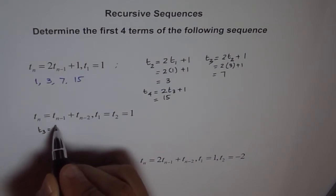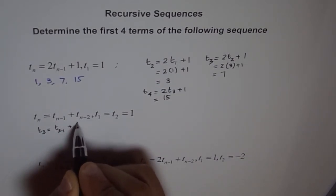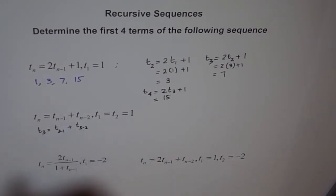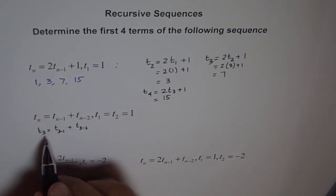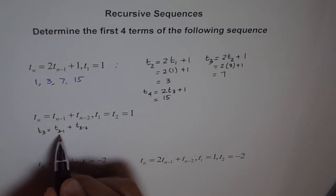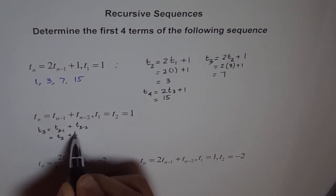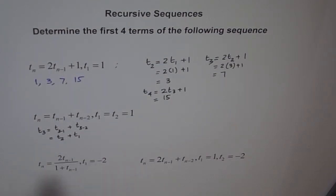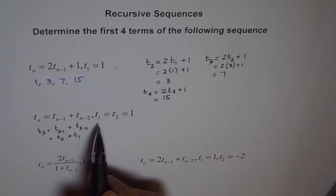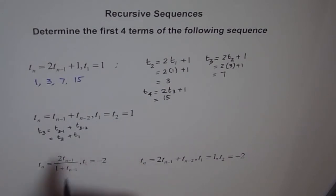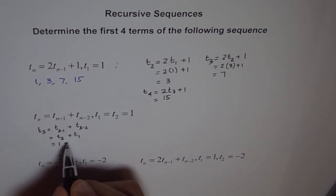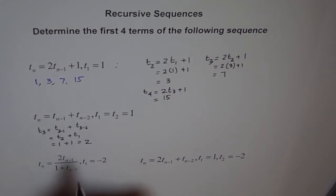Basically, T3 is equal to T2 plus T1. Now what is T2 for me? T2 is 1 and T1 is also 1. So I write this is equal to 1 plus 1 which is equal to 2. So I get T3 as 2.